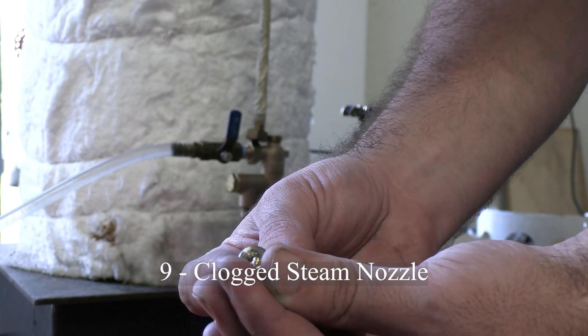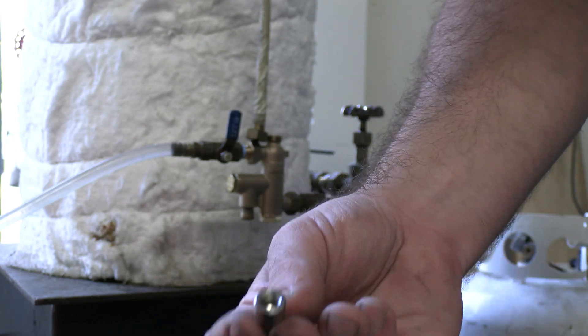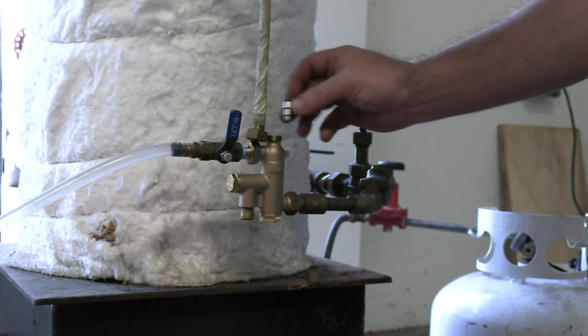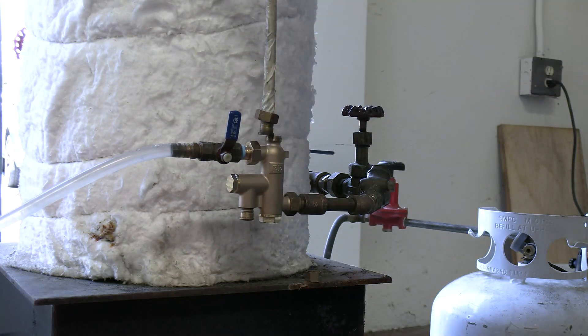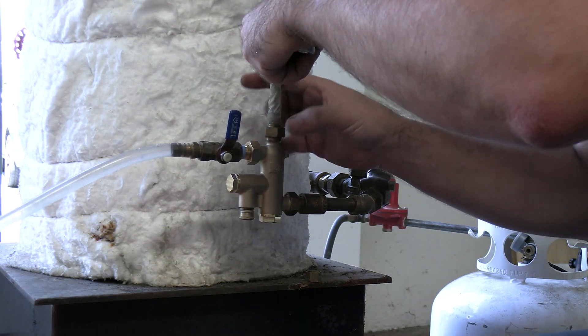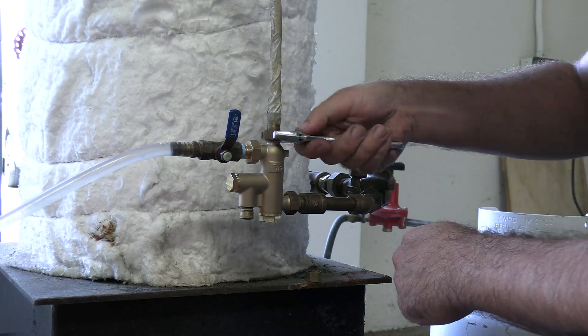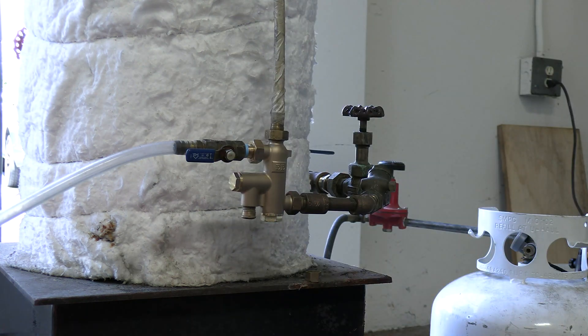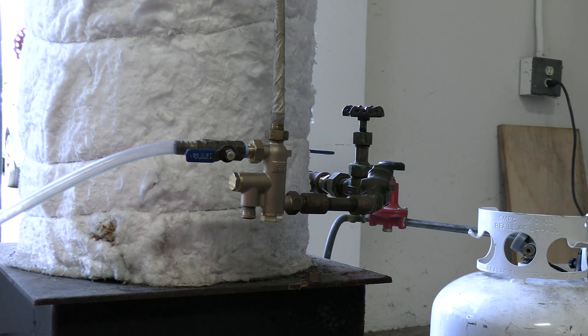A clogged steam nozzle isn't too common, but I've seen it happen, especially with new boilers. Loose shavings in the boiler, turret, and fittings find their way into the steam pipe and get trapped in the steam nozzle. The injector may seem lethargic, like it's simply not getting enough steam.